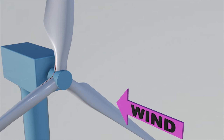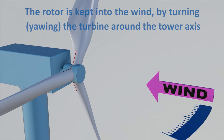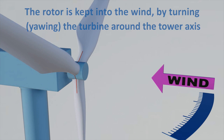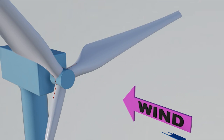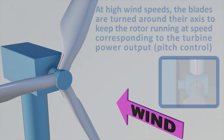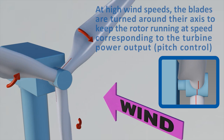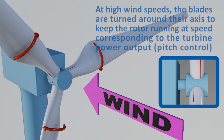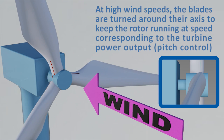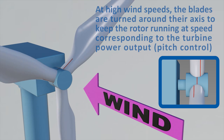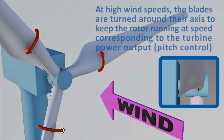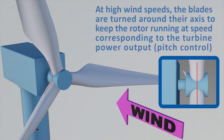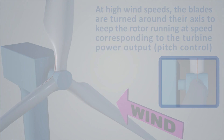Conventional wind turbines turn around the tower axis to follow the direction of the wind. This is called yawing. Any turbine has a maximum power it can produce without being overloaded. During periods of high winds, the blades will turn around their axis to reduce the stress of the blades and the turbine. This is called pitching.